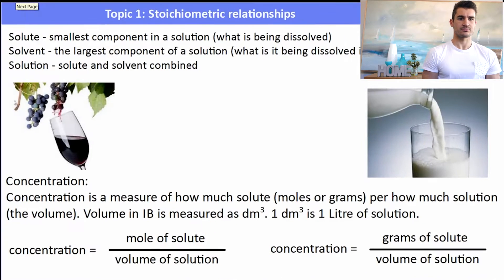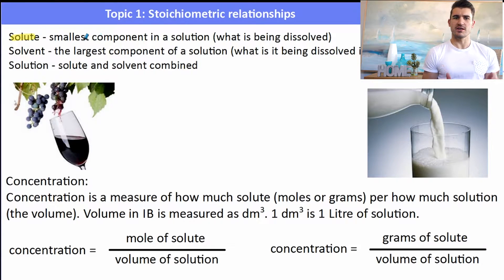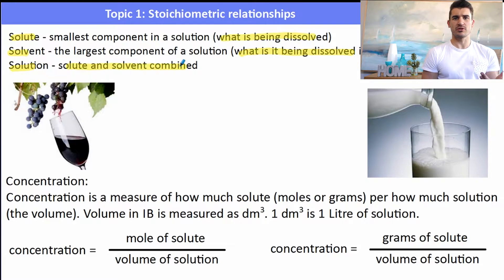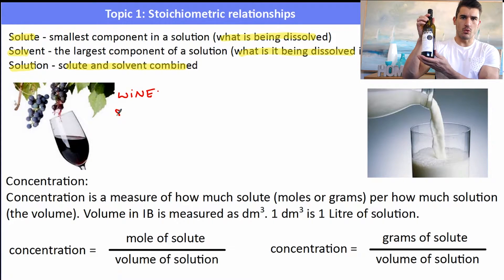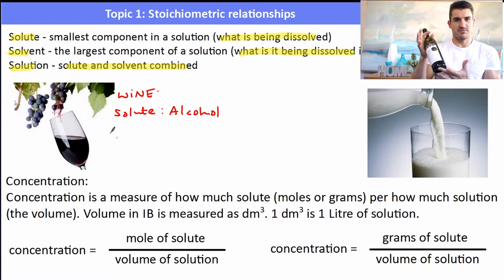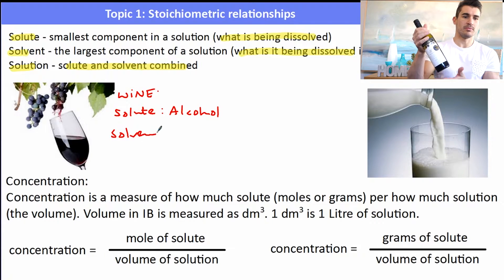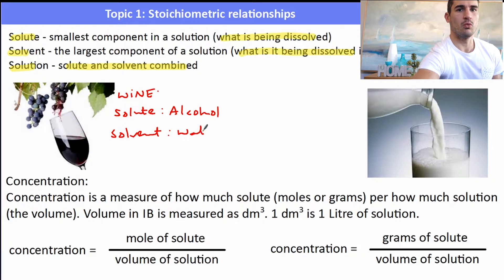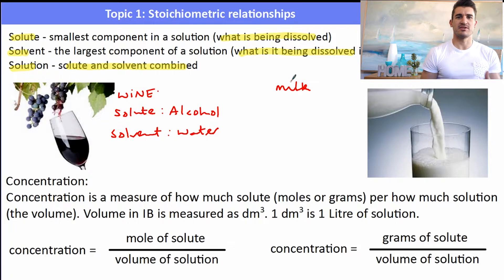What is a solution? A solution contains a solute, which is the smallest component — what is being dissolved — and a solvent, which is the largest component and what the solute is dissolved in. For example, wine contains a solute (ethanol, the alcohol) and a solvent (water), so the alcohol is dissolved in the water.